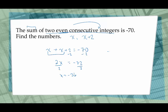So my first consecutive even integer is negative 36 — I'm happy that it's even. The next consecutive even integer is negative 34, since negative 34 is bigger than negative 36. We can check: negative 36 plus negative 34 adds up to negative 70. I feel very good about those two numbers.